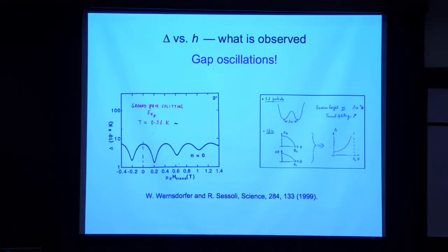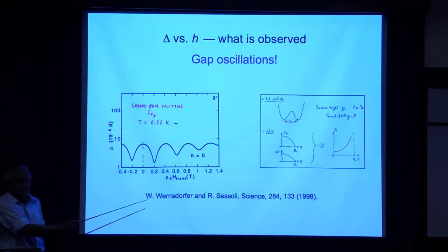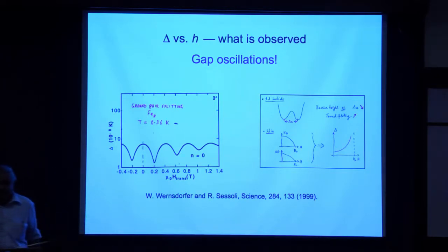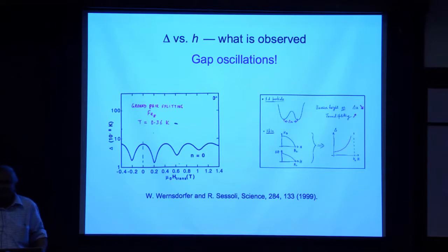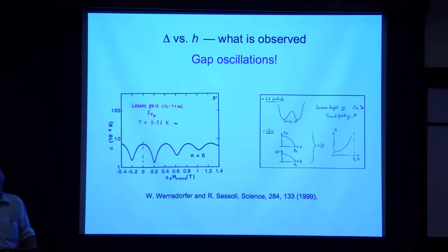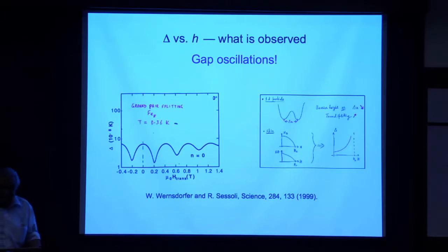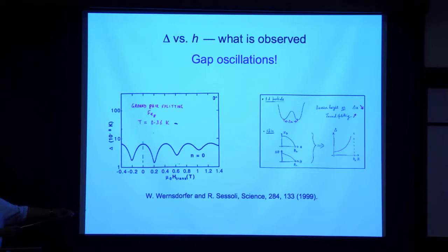This is a very famous experiment in a certain subset of the magnetism community. I don't know if anyone here has seen it — show of hands? No one. Good. Why do you think it looks like this? Anyone in the audience know what is going on over here? Why does the tunnel splitting behave like this? It's a quantum effect — yes, that's a good guess. Anyone else? What does this remind you of? This is two-slit interference.